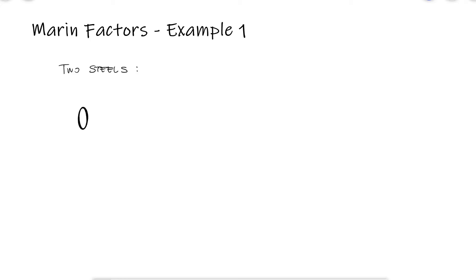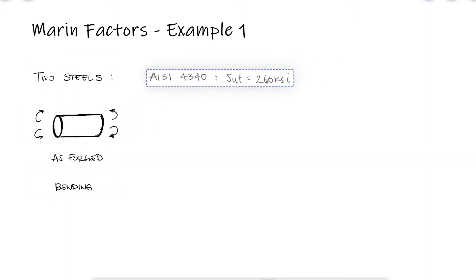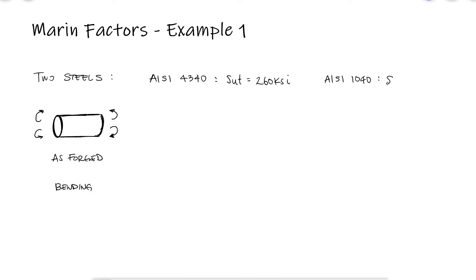There are two steel options to manufacture as-forged connecting rods subjected to bending loads. One is an AISI 4340 with an ultimate tensile strength of 260 KSI. The other is a plain carbon steel 1040 with an ultimate strength of 113 KSI. The diameter of the rod must be 0.75 inches. Which material would you choose if you're designing the rods for infinite life?